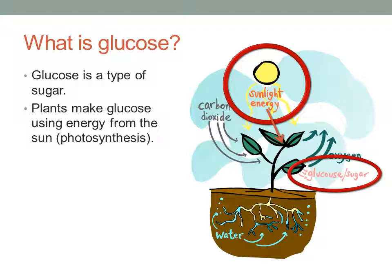Plants make glucose using energy from the sun, which we call photosynthesis. So the sunlight energy is going into the plants, and the plants use that energy and they produce glucose.